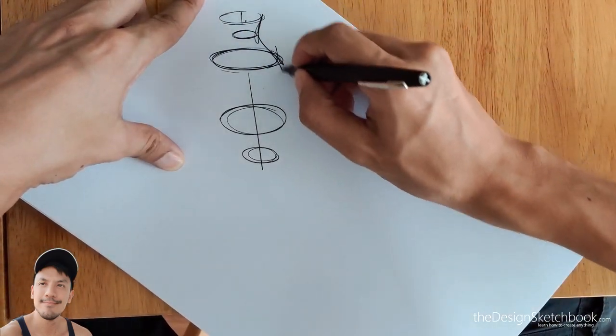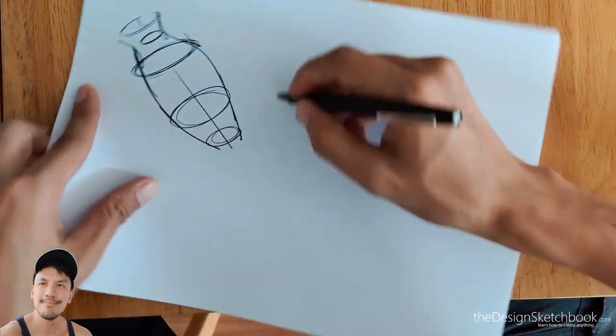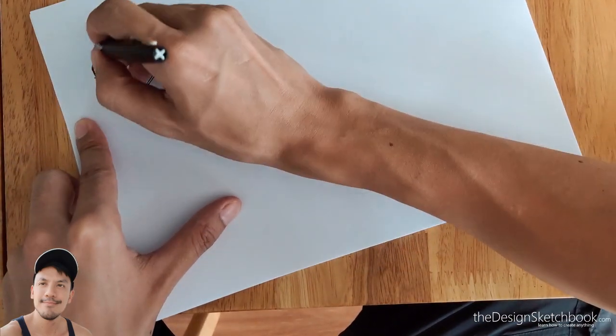So I draw the axis first, and then I'm going to draw some ellipses all along, and then I just connect them with the curves that I want. Simple, right?